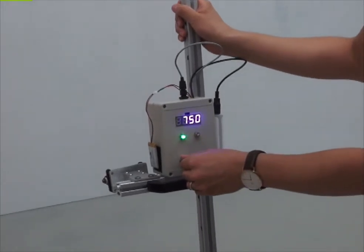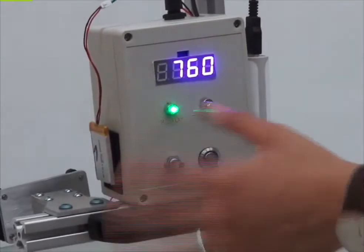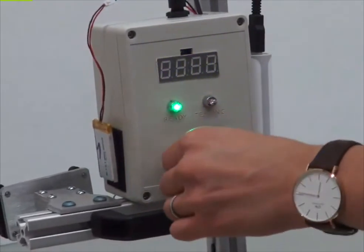We can change the number by rotating clockwise to increase the number and counterclockwise to decrease the number. Let's rotate it to 950.